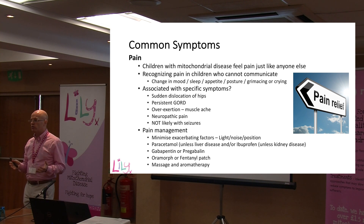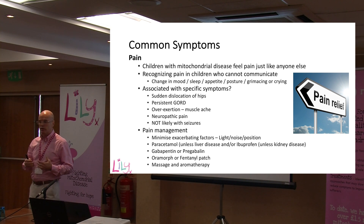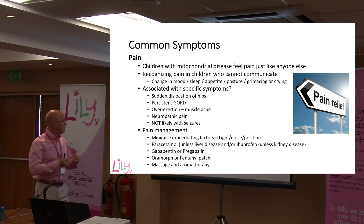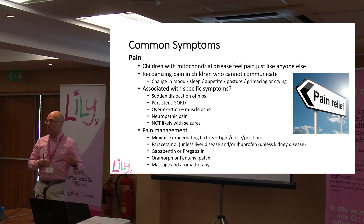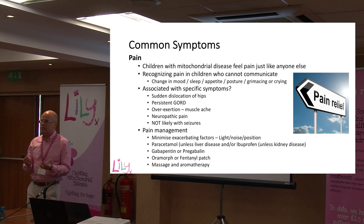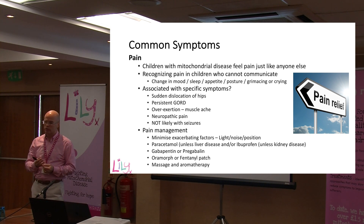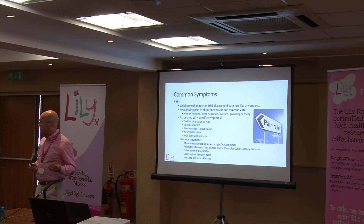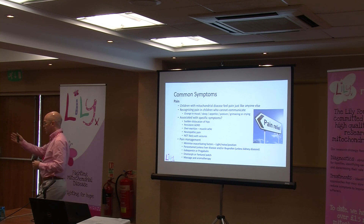Pain might be associated with specific symptoms. A child who has problems with tone, particularly in their legs, may have displacement of their hips, and if that happens suddenly, it can be very painful. It can be as a result of reflux disease — if the child seems distressed and is vomiting, reflux may be the cause. And indeed the mitochondrial disease itself might be causing neuropathic pain.